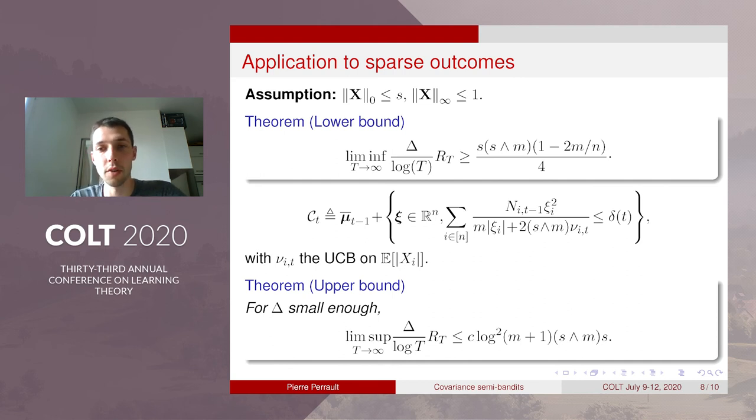So in this particular case we also have some special extra assumption on the outcomes that it is s-sparse. So for the lower bound this is a bit different than the previous analysis and we can't rely on Lai-Robbins. So instead we rely on Lingengraves to have this lower bound.